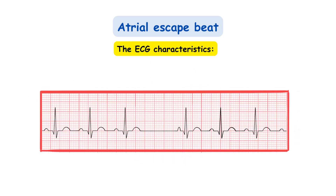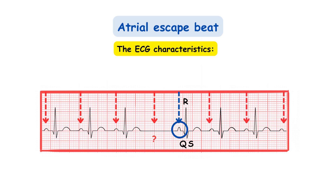Let's examine the ECG. You see here a regular sinus rhythm. After a few cycles, there is a brief pause and a flat baseline. After the break, you notice an appearance of a P wave and subsequent QRST pattern. But the P wave differs in shape from the previous ones generated at the SA node. After that, when the SA node resumes its activity again, the same-looking P wave as before appears again.